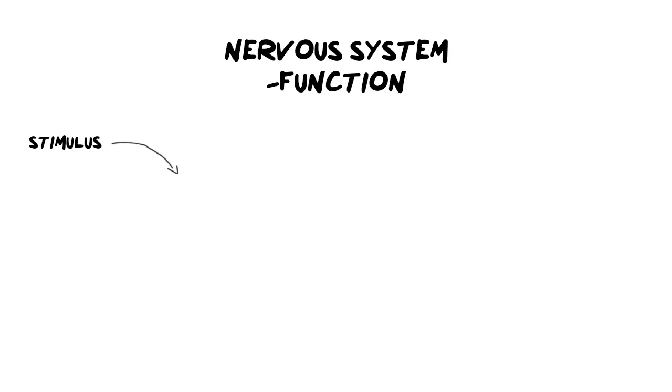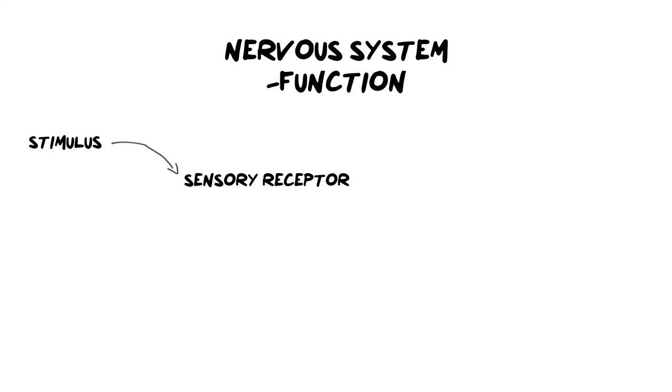A stimulus in the nervous system could be something like light, pain, or sound. Whatever the stimulus is, it needs to be received by someone. That incoming stimulus is going to be sent to some kind of sensory receptor — generally a sensory set of cells, maybe in the eye, the ear, or the skin — and they receive that information.